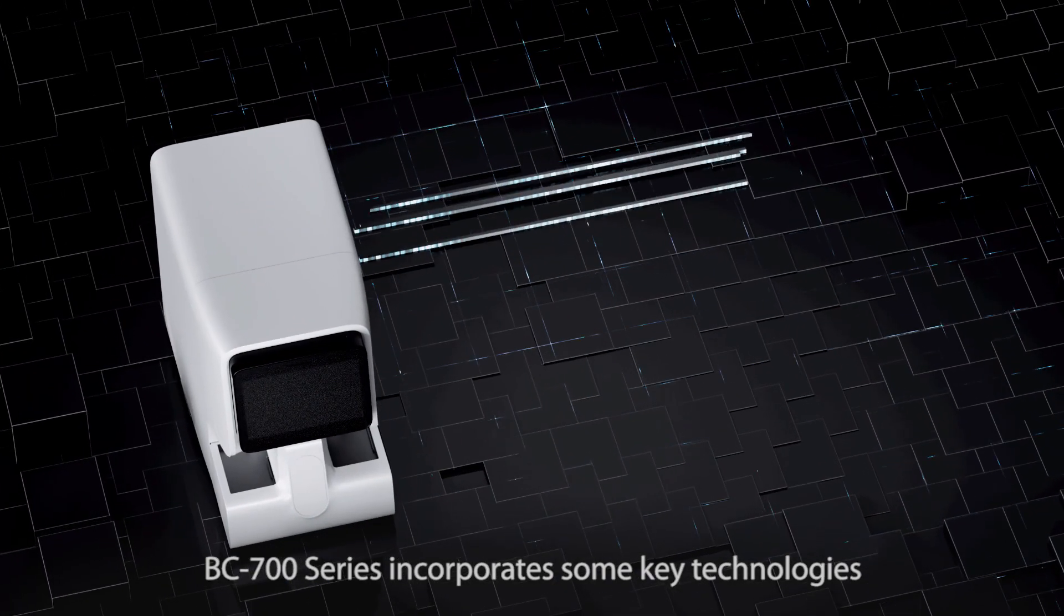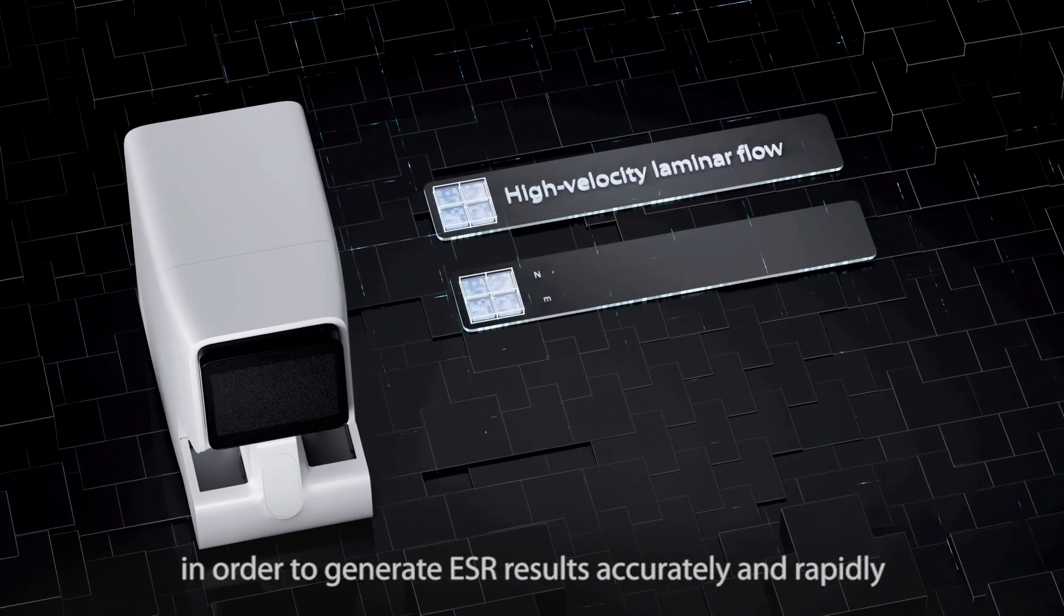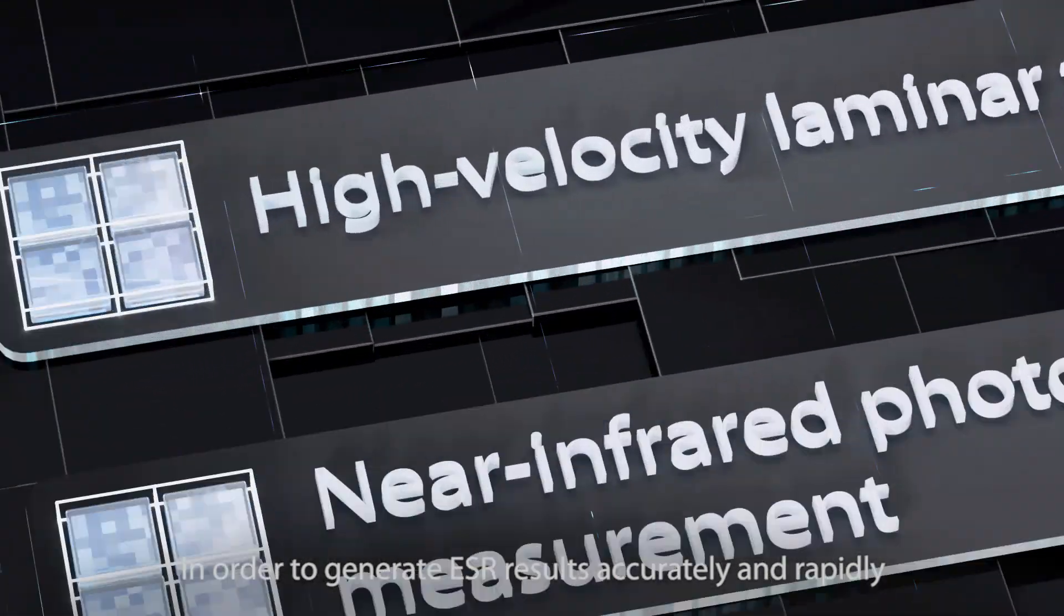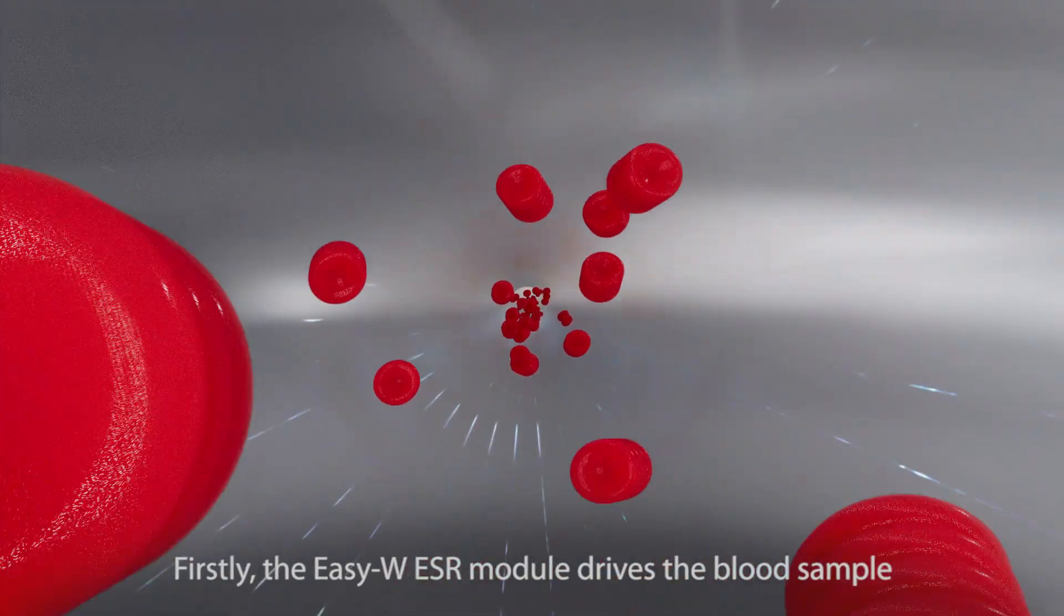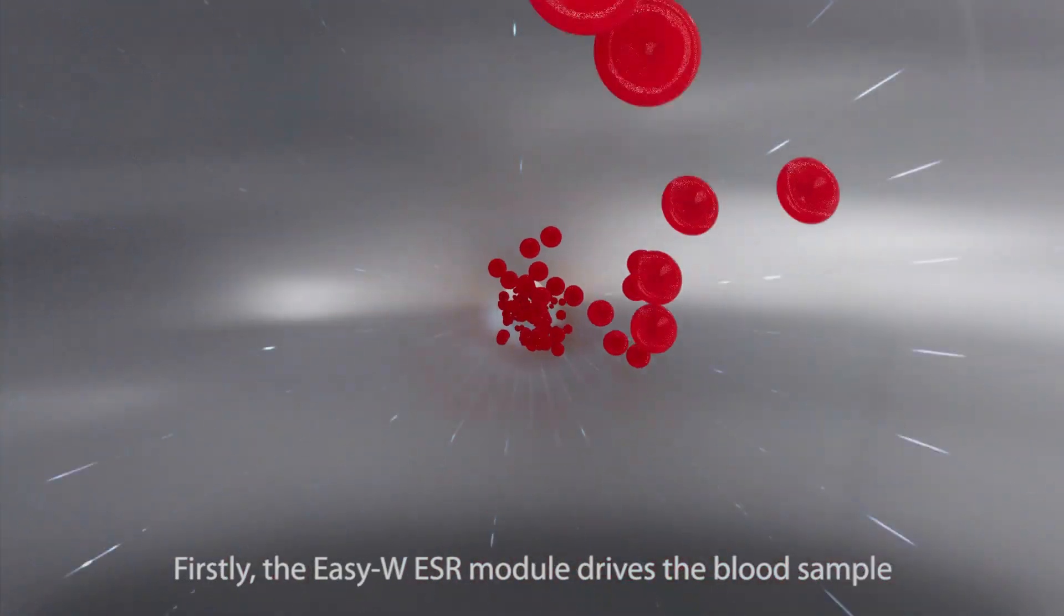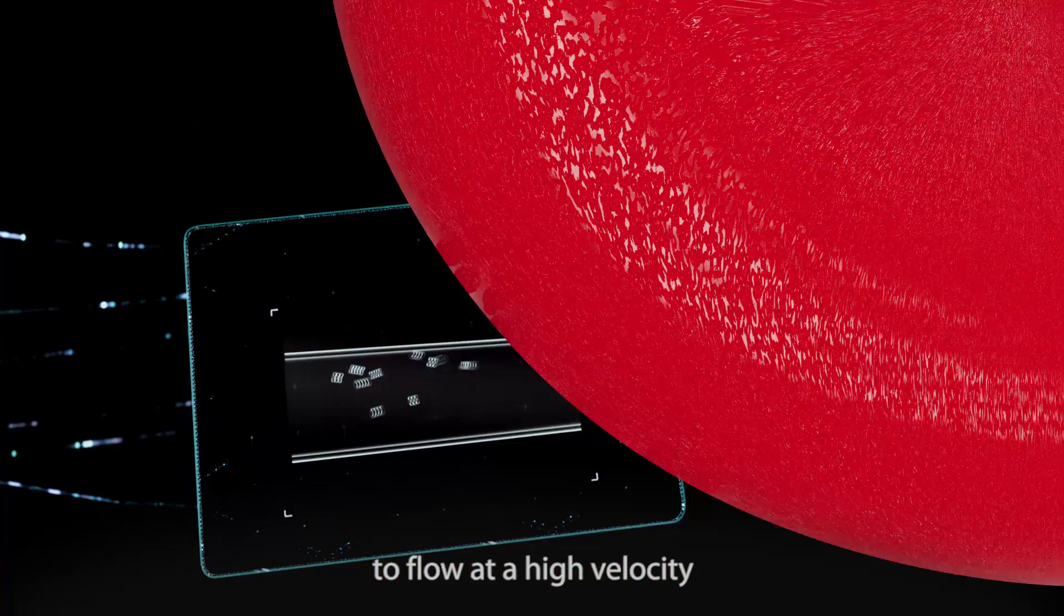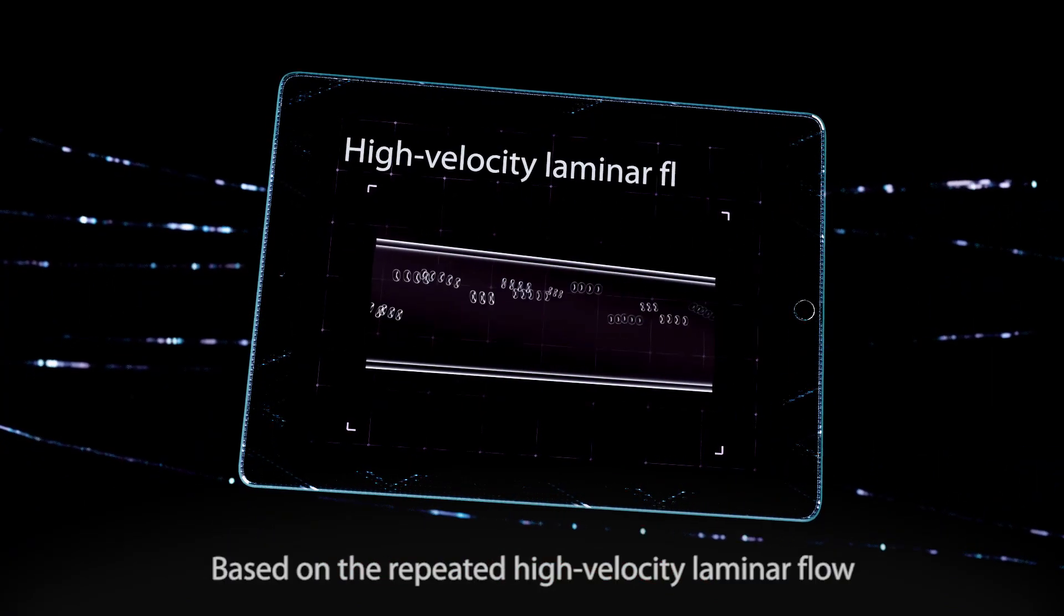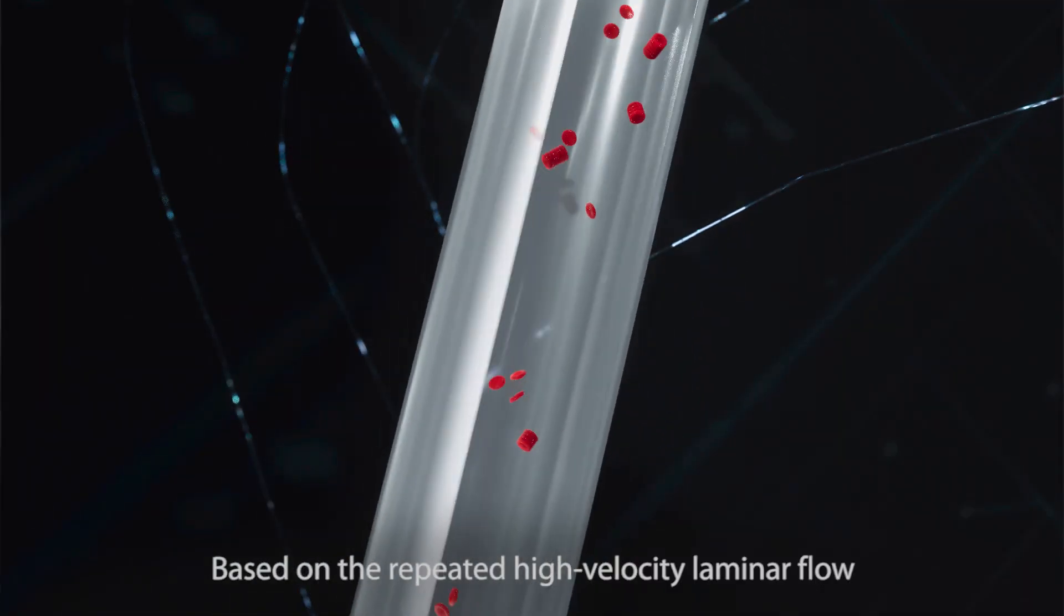BC700 series incorporates some key technologies in order to generate ESR results accurately and rapidly. Firstly, the EZW ESR module drives the blood sample to flow at a high velocity. Based on the repeated high velocity laminar flow,